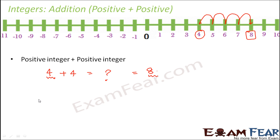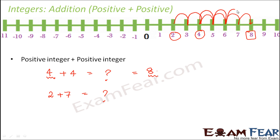Let us look at another example: 2 plus 7. Since 7 is a positive integer, we move towards the right from 2 — 1, 2, 3, 4, 5, 6, 7 — and we have reached 9. So 2 plus 7 equals 9.